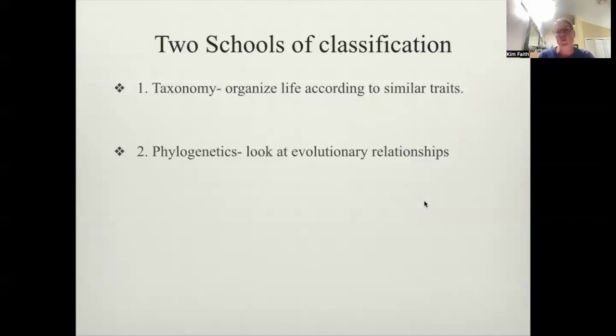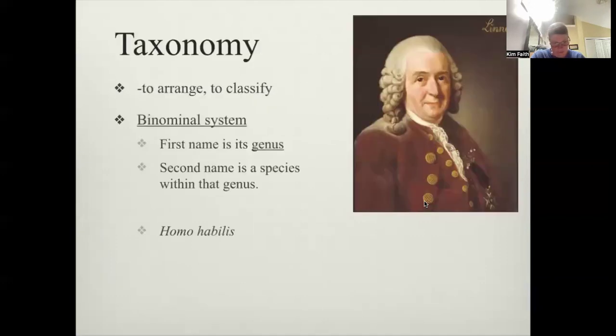And then we have these two schools of classification. We have taxonomy, and taxonomy organizes life according to similar traits. They look the same. And then we have phylogenetics that they don't just look at traits, they look at evolutionary relationships. So a little different. The job of taxonomists is to arrange and classify organisms. We talked about the binomial naming system, and that's where we use two names. And we talked about Linnaeus and how he came up with this particular naming system to make sure scientists were talking about the same organism.